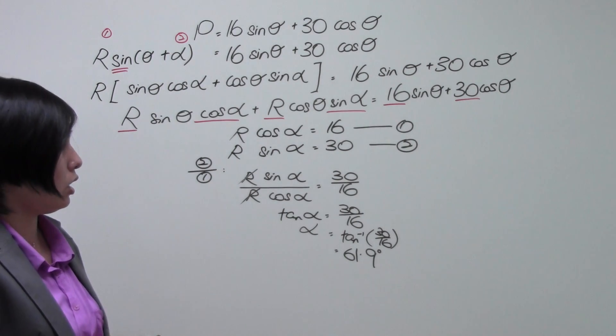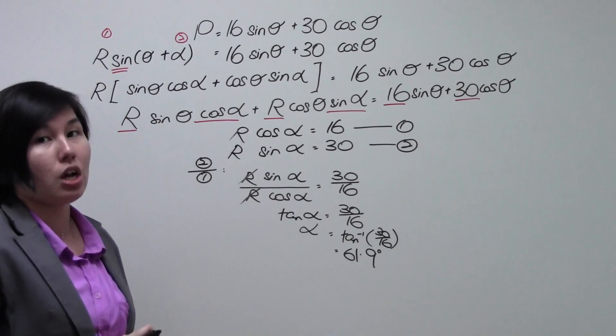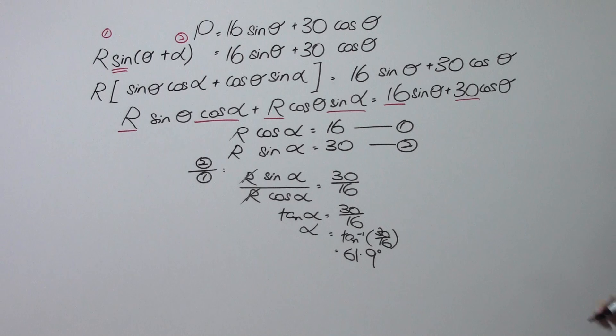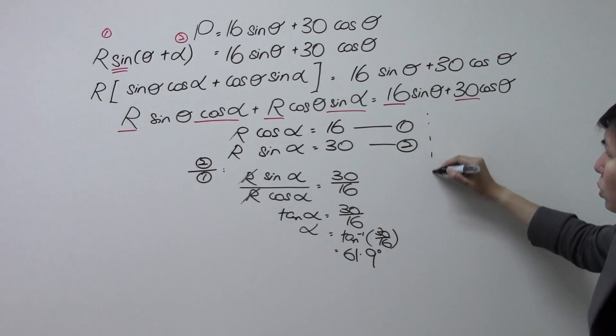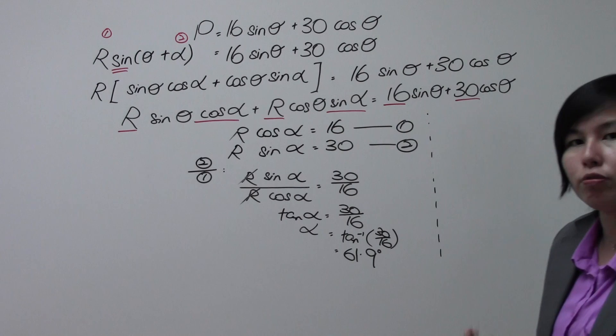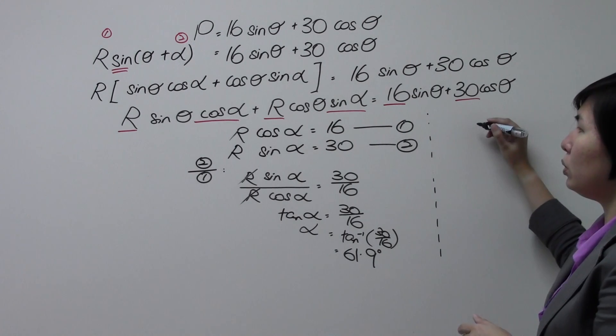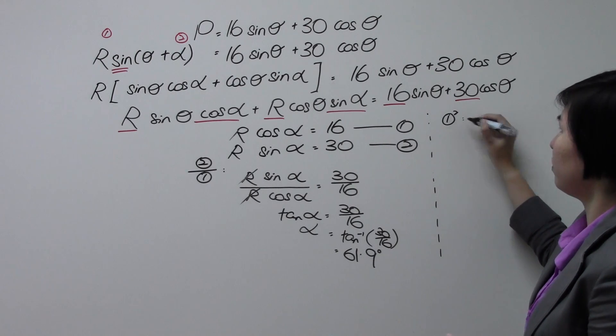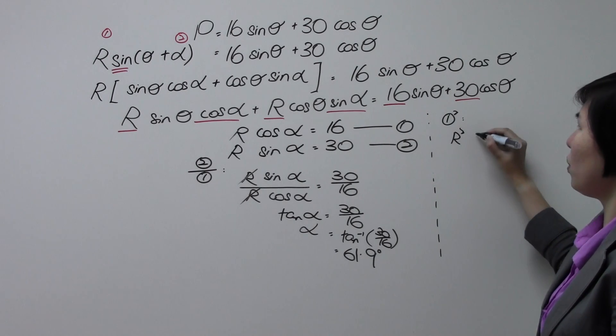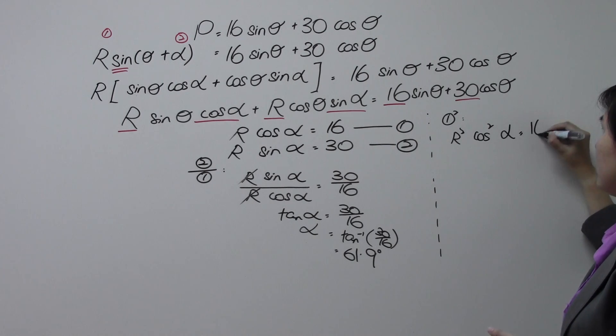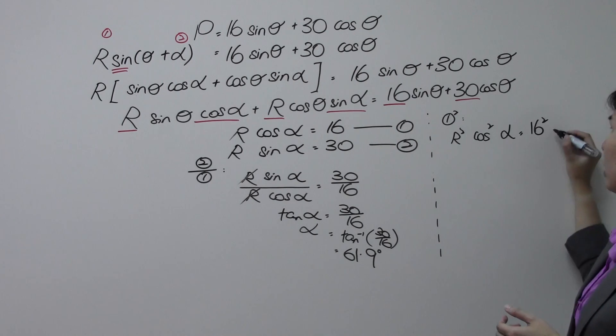Next, we're going to be finding what is R. So I'm going to be shifting to this side of the board. Now to find R, what you need to do is, it is a strategy that you need to be aware of. So what we're going to do is, we're going to go ahead and square our equation 1, which will give us R square cosine square alpha is equals to 16 square.